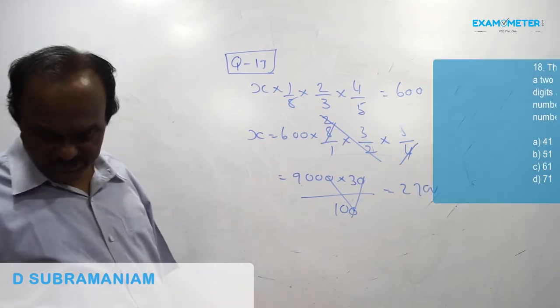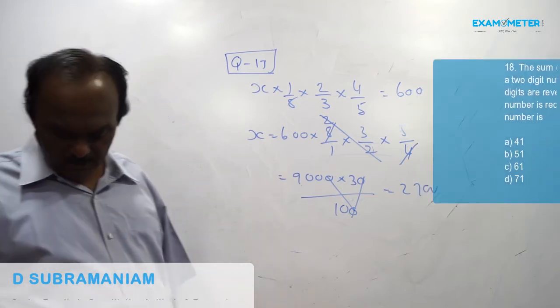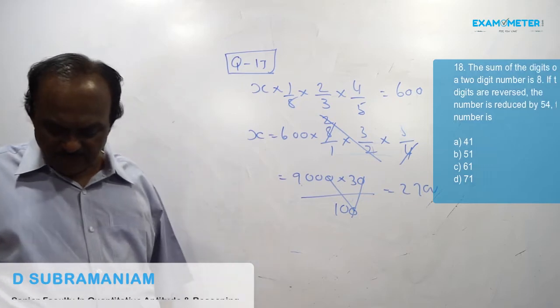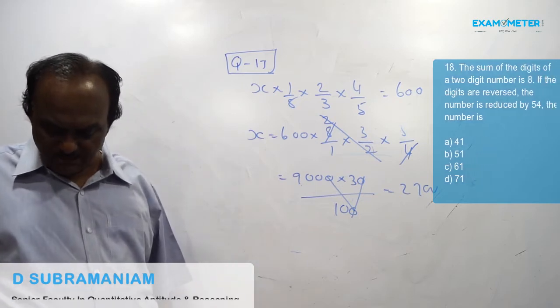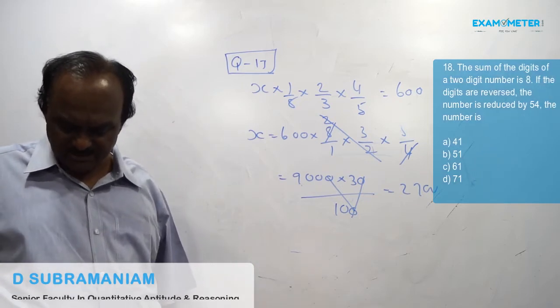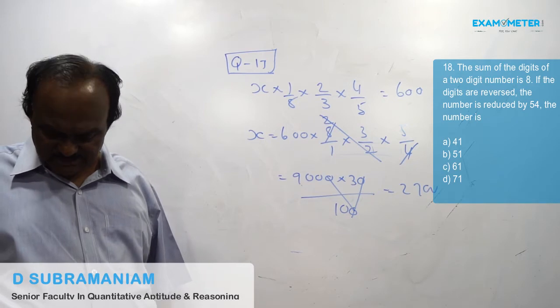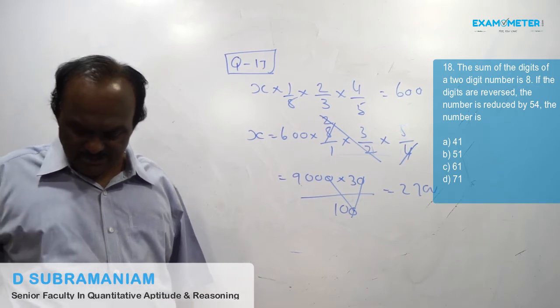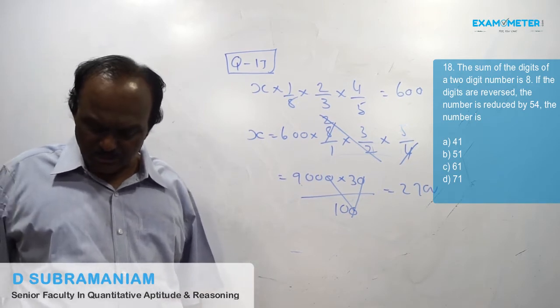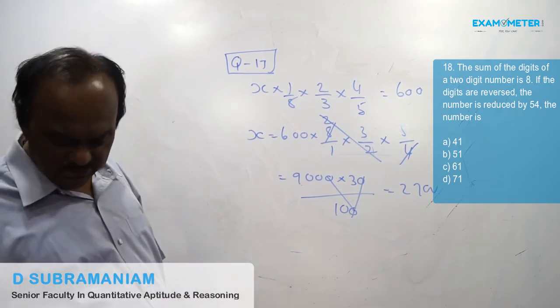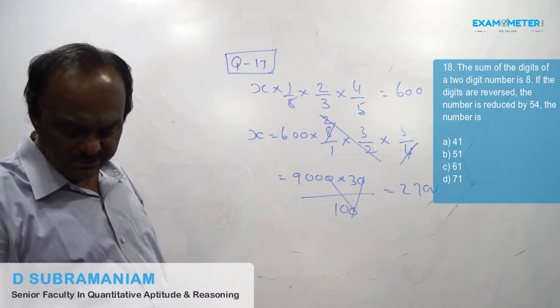Question number 18: The sum of the digits of a two-digit number is 8. If the digits are reversed, the number is reduced by 54. The number is?